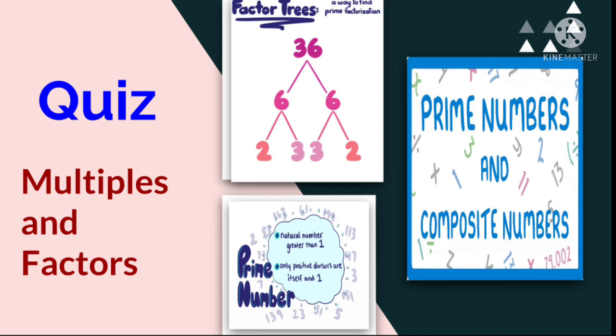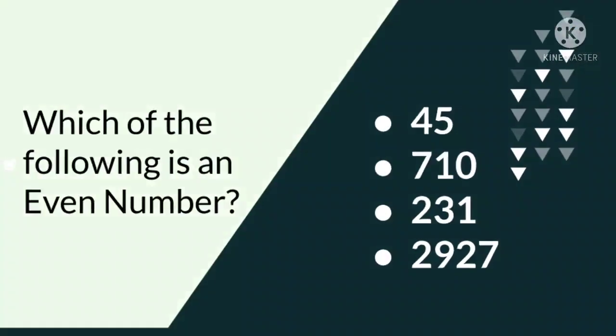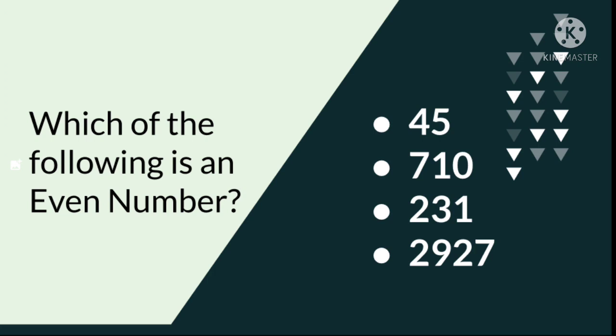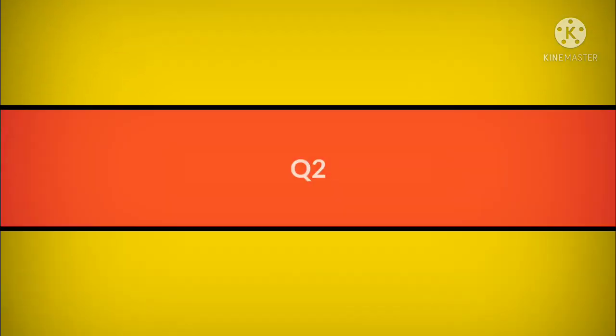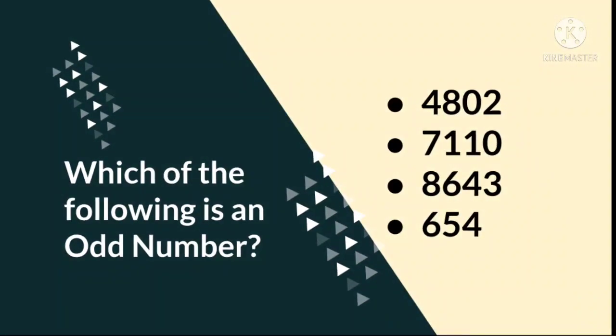Let's get started with our first question. Question number 1: Which of the following is an even number? Your options are 45, 710, 231, and 2927. So select the even number and write it in your notebook. Question number 2: Which of the following is an odd number? Your options are 4802, 7110, 8643, and 654. This time you have to find out the odd number.